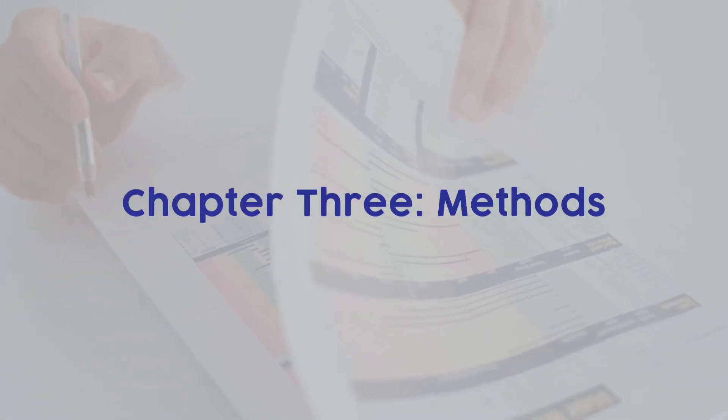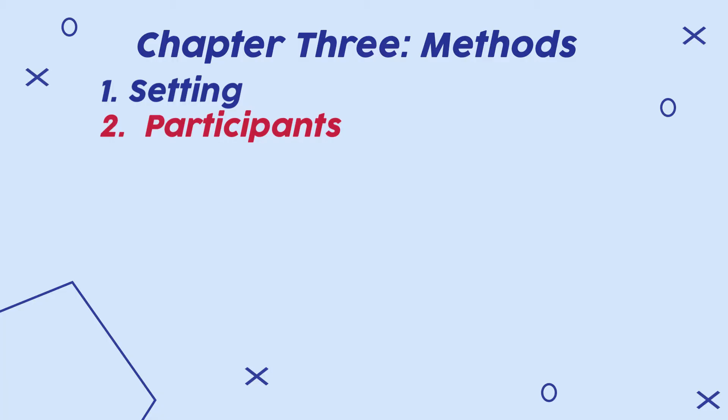Chapter 3 is the methods chapter, which explains the research methods and designs used to conduct a study. The main objective is to provide a clear description of the actual procedures used. You will inform the reader of how your study was conducted using detailed descriptions of every aspect. The main components include: 1. Setting — where the study took place; 2. Participants — the individuals who participated and how they were selected, whether through random sampling or convenience sampling.